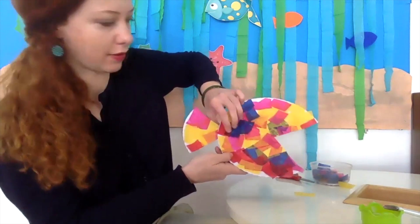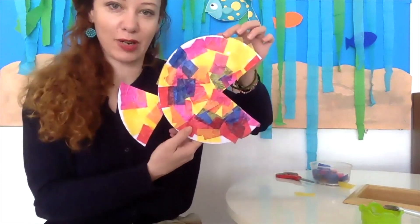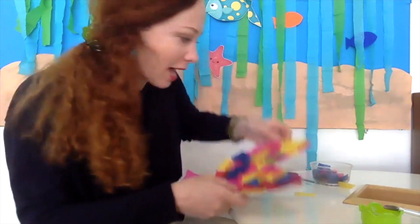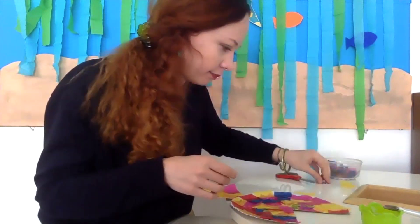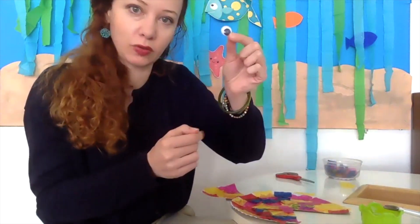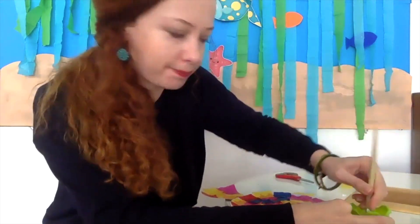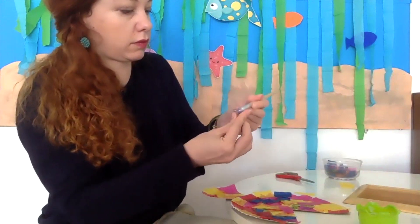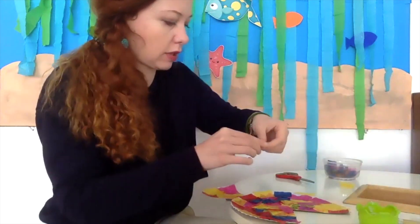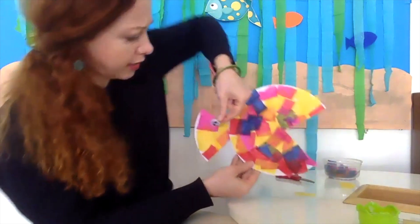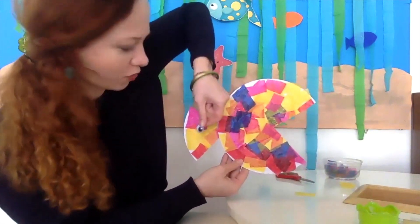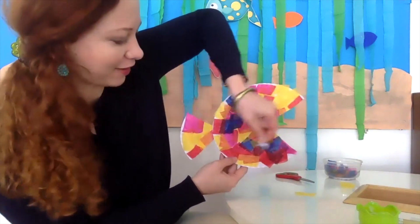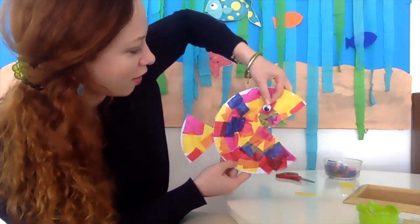Turn it around. Then you have your little rainbow or tropical fish, but I want an eye. Take your eye, add some glue, and stick it. Does the eye go here? No, it doesn't go on the tail. Does it go here? No, not on the belly. It goes up here.